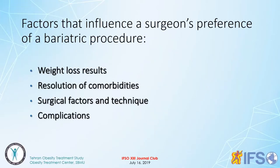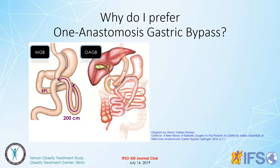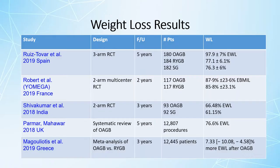We have four factors for surgeons that influence choosing one bariatric procedure over another: first, weight loss results; second, resolution of comorbidity; third, surgical factors and technique; and fourth, complications. Why does my group prefer one anastomosis gastric bypass — the mini gastric bypass — instead of Roux-en-Y gastric bypass? Let me bring five very good studies about weight loss results.